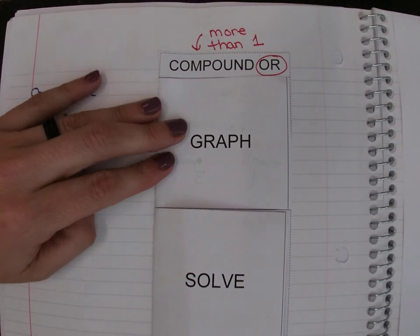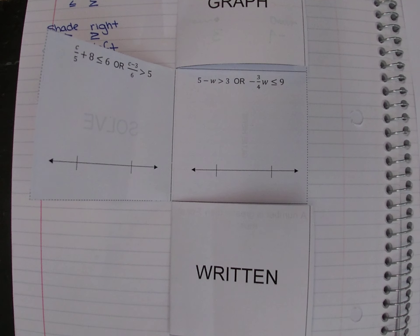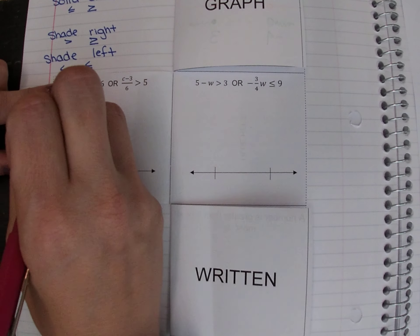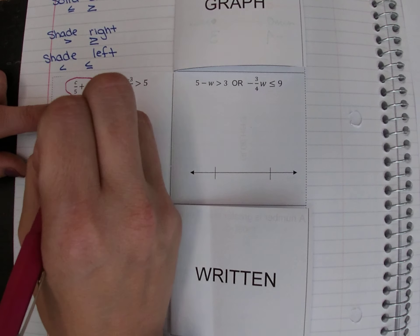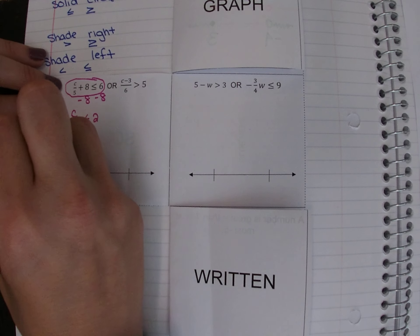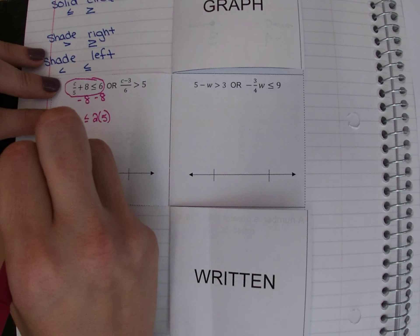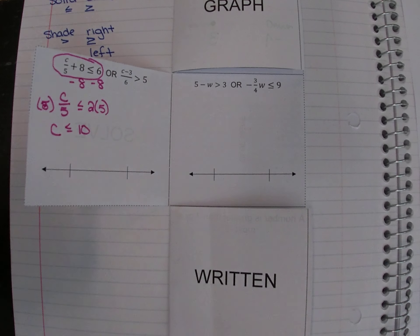We can also solve compound inequalities. The good news is it's really straightforward — it's just solving two separate inequalities within one problem. So we solve them as if they're two separate things. For the first one: c over 5 plus 8 is less than or equal to 6. Undo adding 8 by subtracting 8, then undo division with multiplication.